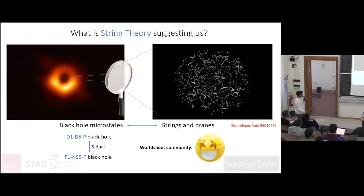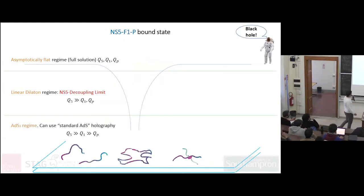Let me tell you roughly how the structure is. If you take these three charges to be roughly of the same order, you don't take any hierarchy, you look at the asymptotically flat solution. But if you take the Q5 to be much larger than the other ones, you enter the so-called linear dilaton regime, which is related to some little string theory physics. If you further take this hierarchy where Q5 is much bigger than Q1, which is much bigger than QP, you end up in the so-called AdS3 × S3 regime where the AdS3 × S3 technology that has been fully developed in the last years can be applied.